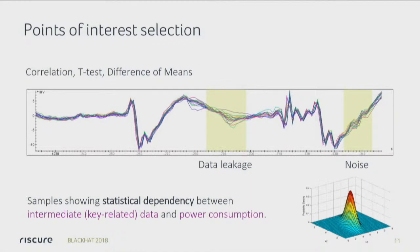Another step in side-channel analysis is what we call point-of-interest selection — we want to predict what the S-box output is. Ideally we don't analyze the entire trace; we only analyze the part where this S-box output value is present. This is particularly important for template attacks because they're very sensitive to putting in samples that actually have nothing to do with the key — they add so much noise that the number of training traces you need is too much to do decent key extraction.